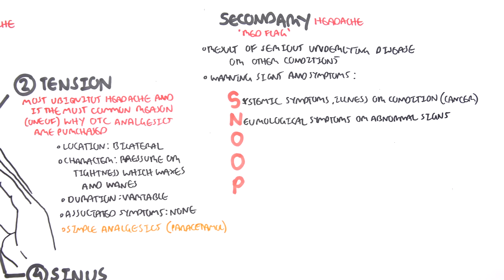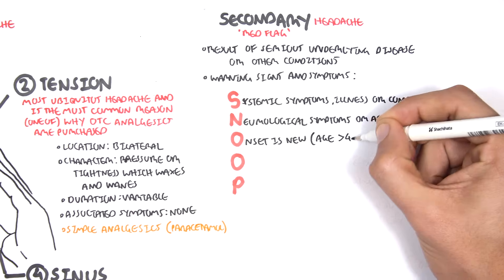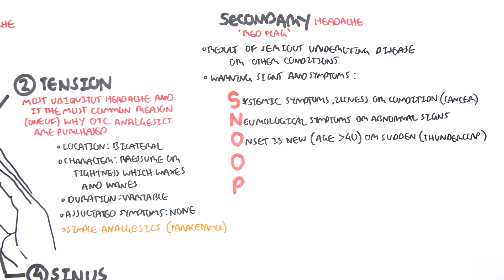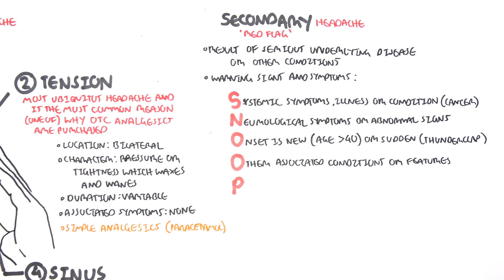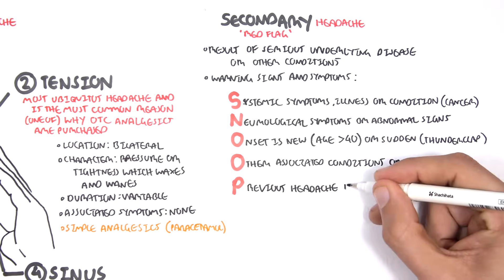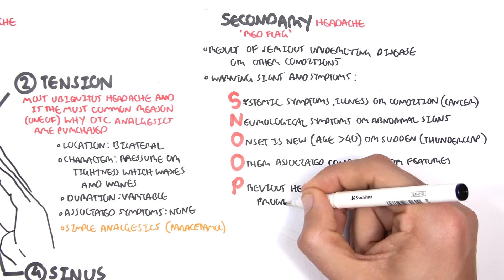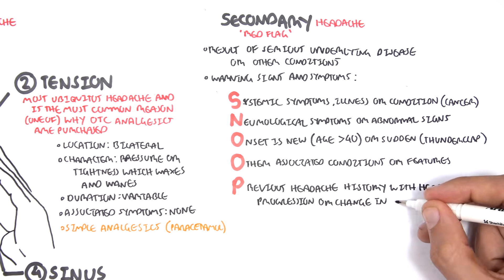O is for onset which is new, age greater than 40, or it's sudden, such as when you have a thunderclap sort of feeling, which is a subarachnoid hemorrhage essentially. The other O is for other associated conditions or features. P is for previous headache history with headache progression or change in attack character.